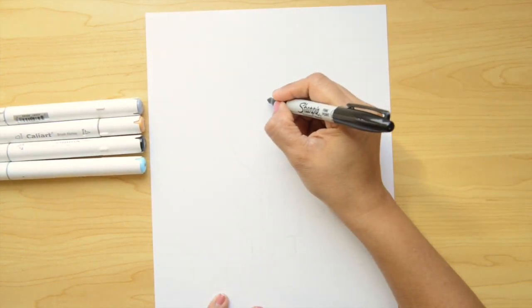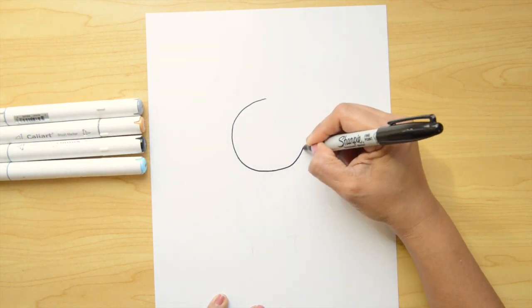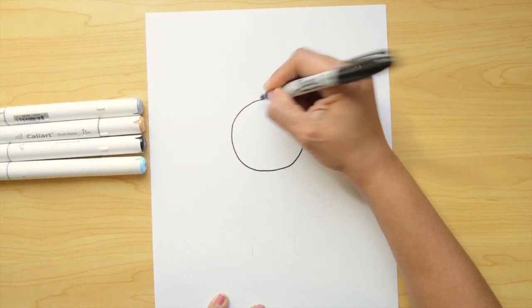We're gonna do a big circle for the head and I'm gonna go to the left and then coming back to the right. I'm going slow and close it.